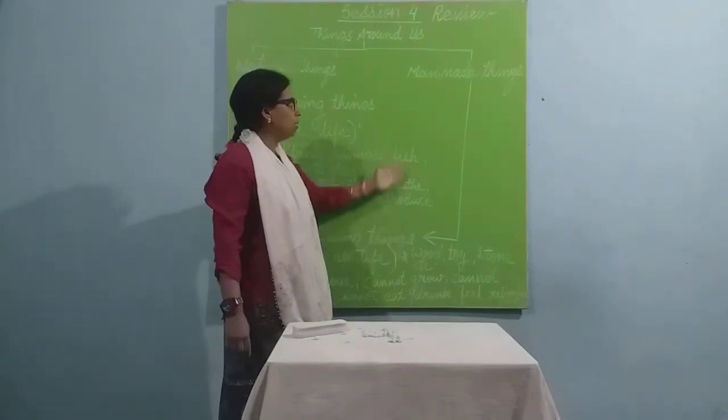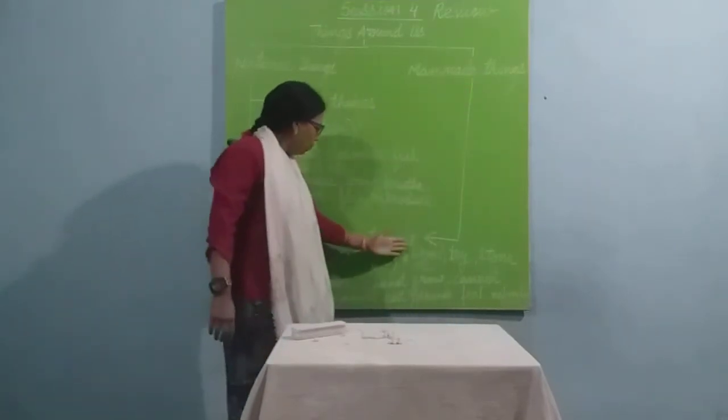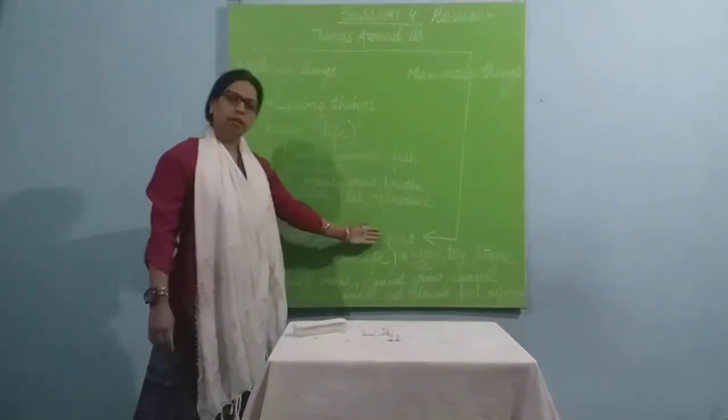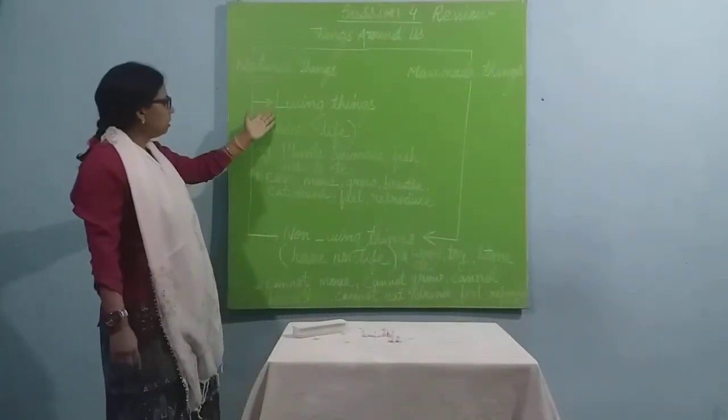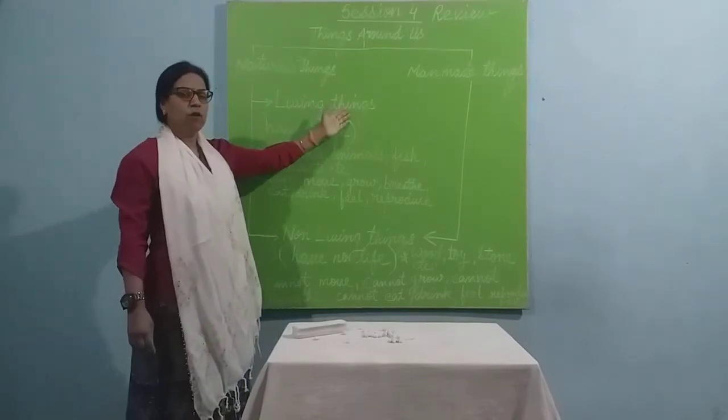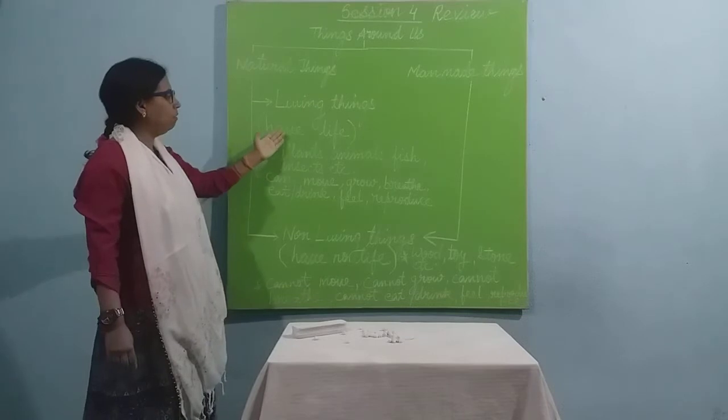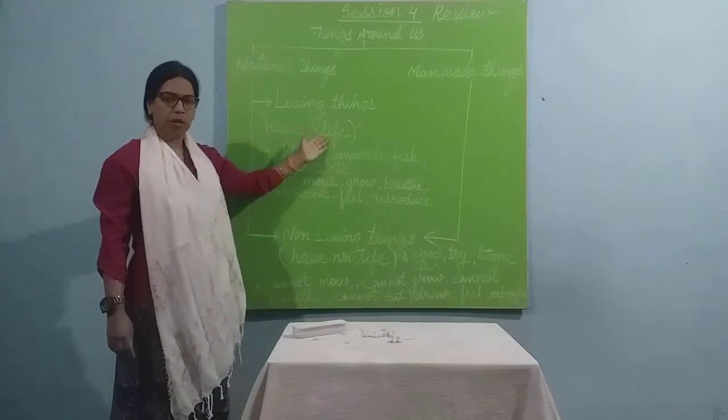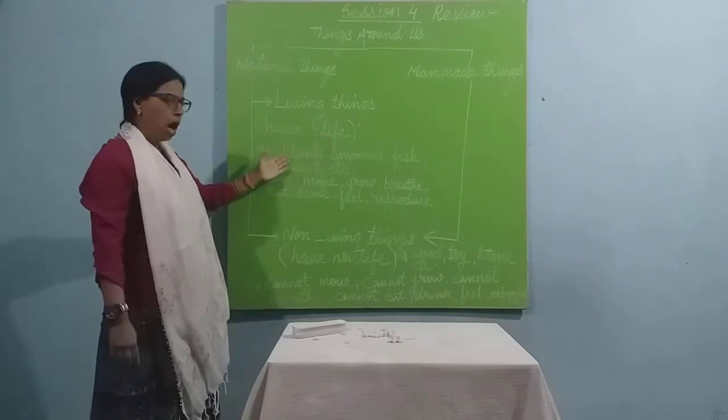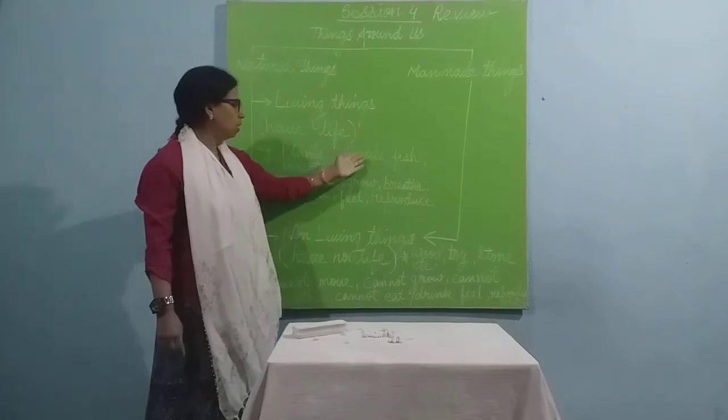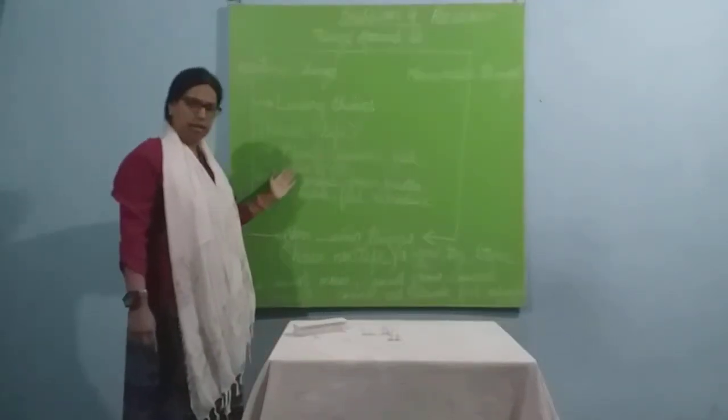Whereas man-made things are always a non-living thing. When we say living things, we mean those things which have life in them. For example, plants, animals, fish, insects, etc.